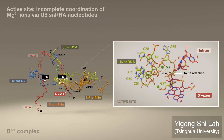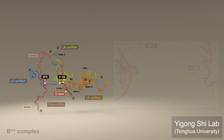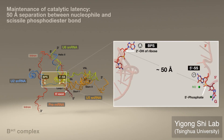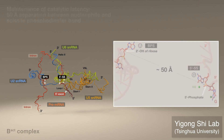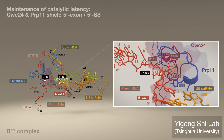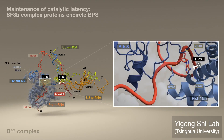In the active site, coordination of magnesium ions via U6 nucleotides is incomplete. The M1 ion is yet to be loaded. Importantly, catalytic latency in B-ACT is maintained by a 50 angstrom gap, spanned by CWC24 and PRP11, which shield the 5' exon and splice site junction, as well as the RES complex and SF3B, which encircles the BPS.